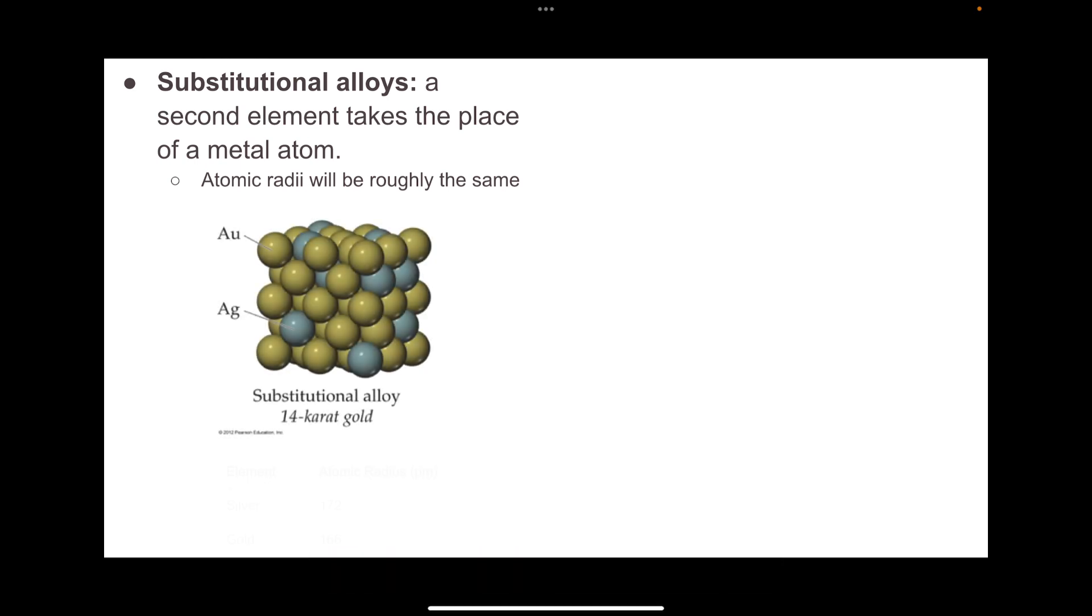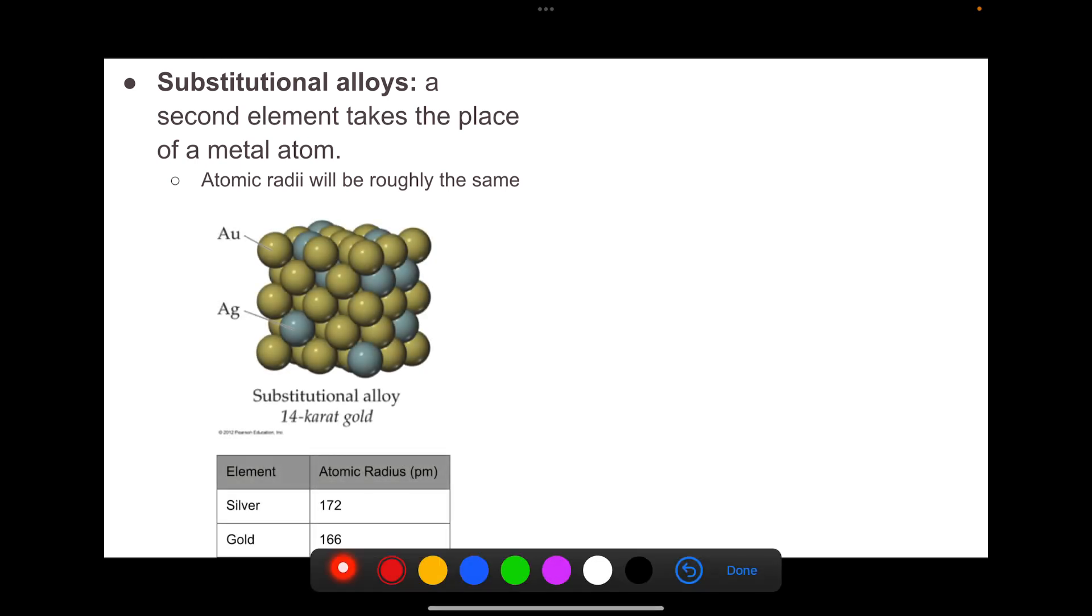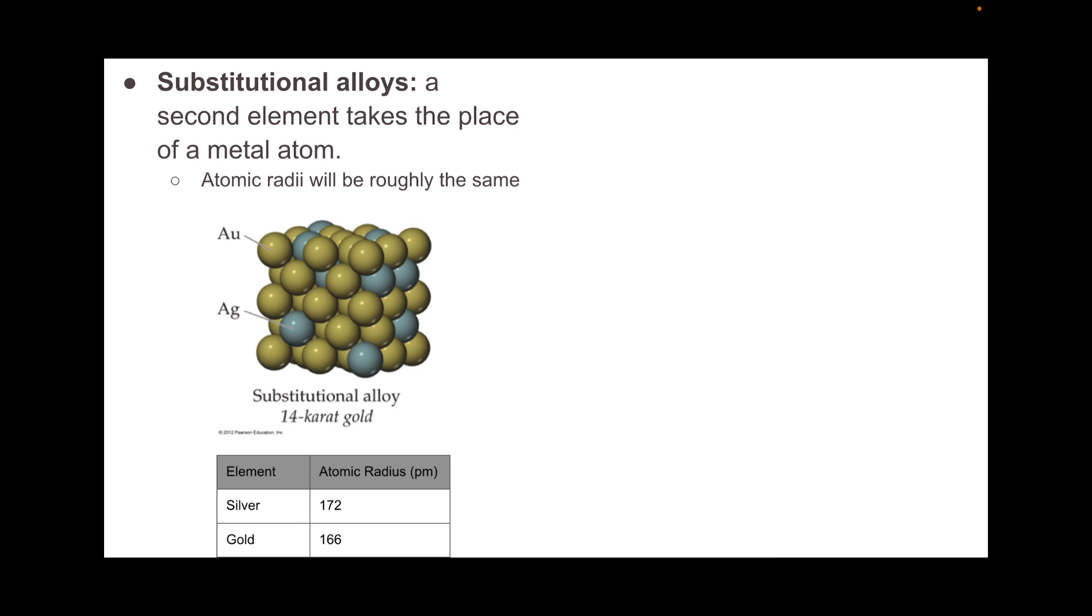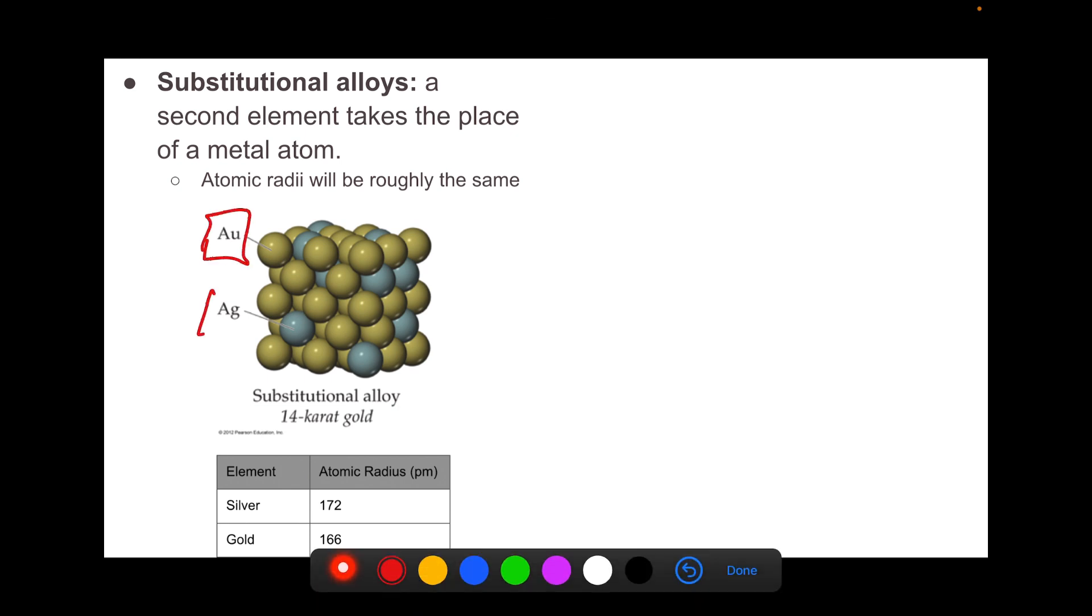So for instance, 14 karat gold is a substitutional alloy. 14 karat gold is primarily gold with a small amount of silver alloyed with it. Notice that both gold and silver have very similar atomic radii. So a silver atom is actually substituted for a gold atom.